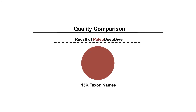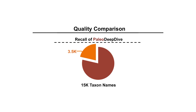Paleo Deep Dive also has a higher recall. For example, Paleo Deep Dive discovered 15,000 distinct taxa in the 500 journal articles, while PaleoDB identified just 1,000. In fact, over 3,000 taxa identified by Paleo Deep Dive were not present at all in PaleoDB.